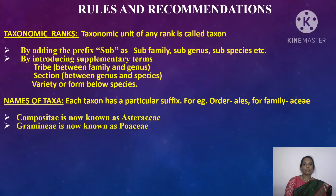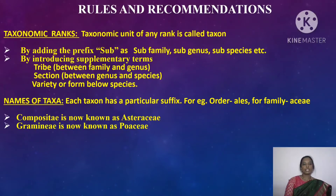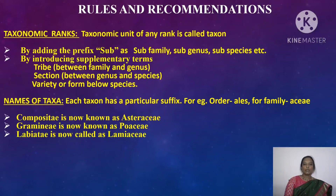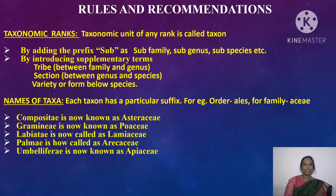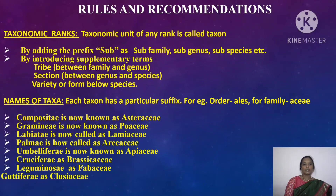The eight exception families with alternate names are: Compositae, now known as Asteraceae; Gramineae, now known as Poaceae; Labiatae, now known as Lamiaceae; Palmae, now known as Arecaceae; Umbelliferae, now known as Apiaceae; Cruciferae, now known as Brassicaceae; Leguminosae, now known as Fabaceae; and Guttiferae, now known as Clusiaceae.